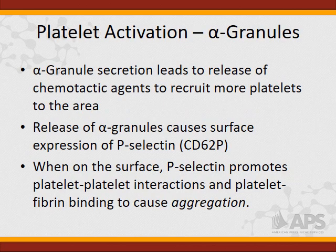The basis of the assay is to detect the product of alpha granule secretion. When platelets get activated, they secrete alpha granules, which causes surface expression of a molecule called P-selectin. The basis of our flow cytometry approach is to detect P-selectin on the surface.